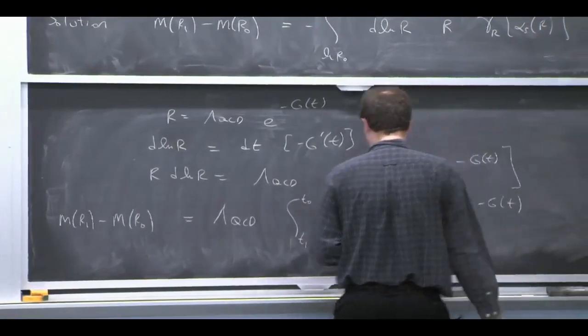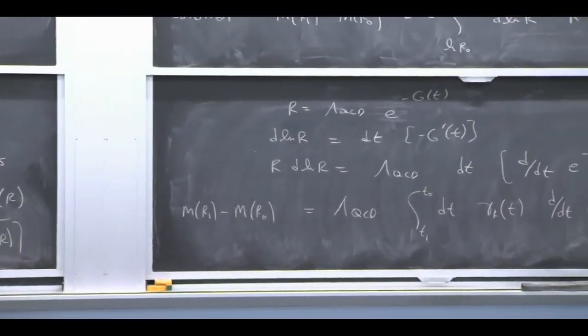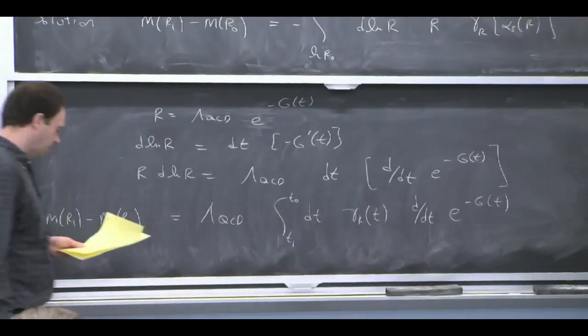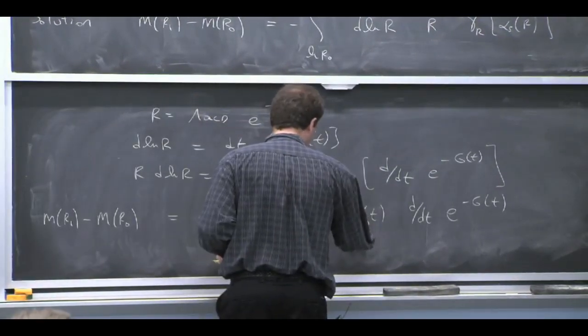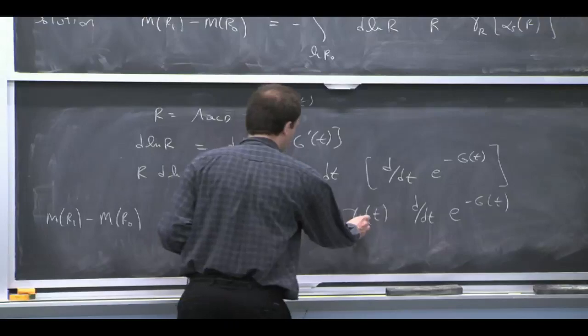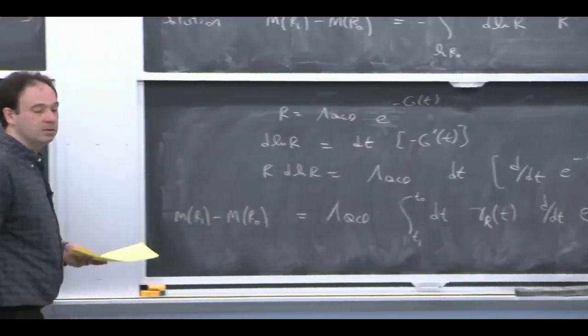So if I write it in terms of T, then that's the solution. That's the formal solution in terms of a, and I switch variable also in the anomalous dimension. And that's the formal solution to the RG.